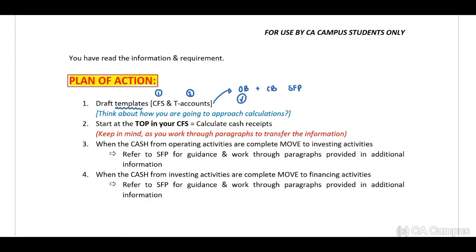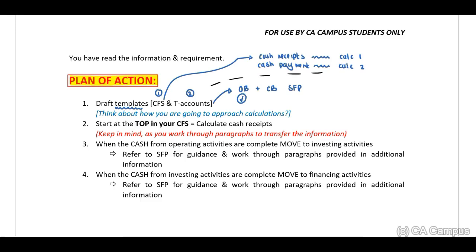Think about how you are going to approach your calculations. When I look at my cash flow statement, I know I have to start with my cash receipts — that will be calculation one. My next line item will be my cash payments — that will be calculation two. My T accounts will follow numerical order: calculation three onwards. If you draft one or two T accounts that you're not going to use, it's fine. I go into automatic mode — drawing lines, adding opening and closing balances. If I've included goodwill and don't need it, I just leave it and move on.